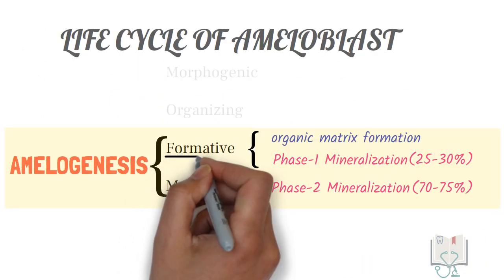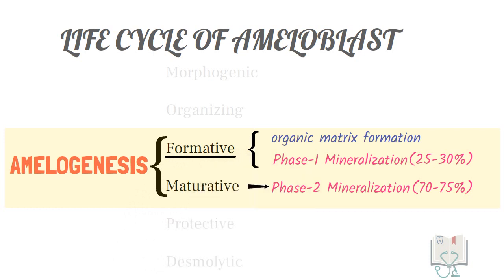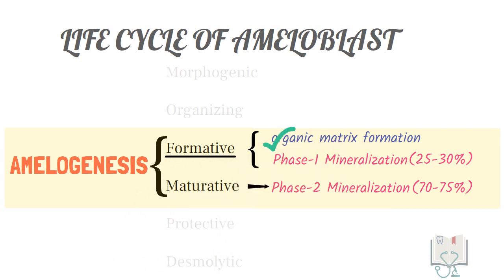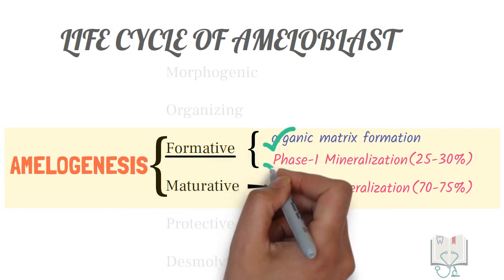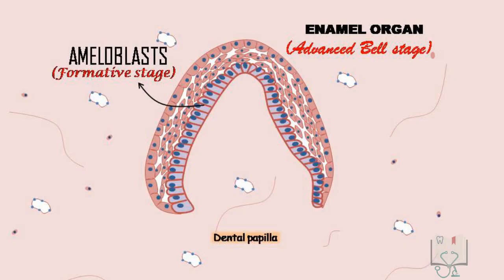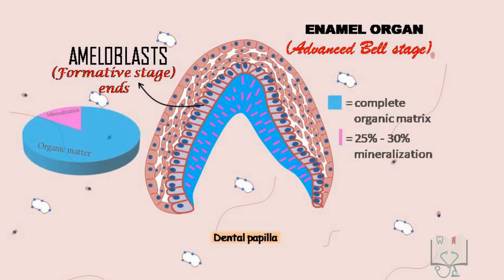By the end of the formative stage, complete organic matrix secretion and the first step of mineralization are done. That is, the complete width of enamel is formed, and it is a mixture of enamel proteins and 30 percent mineralization.